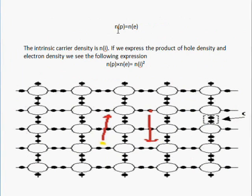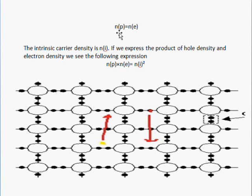Mathematically, the density of holes np and the density of electrons ne are equal due to the recombination process at thermal equilibrium. The intrinsic carrier density ni is the general expression for both, since both are equal: ni equals np, which equals ne. If we express the product of hole density and electron density, ni squared is that product.